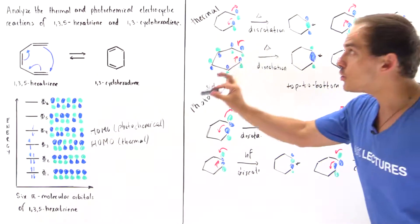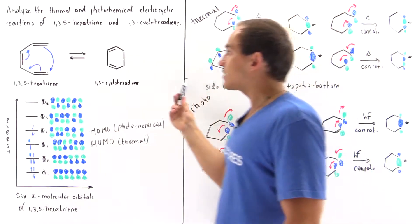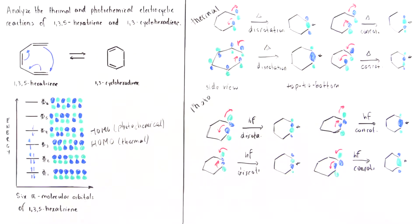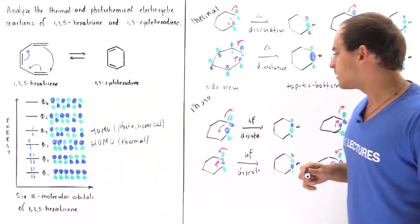So we see that thermal electrocyclic reactions of these molecules under the thermal conditions, the disrotation leads to bonding while the con-rotation does not. For the photochemical case,